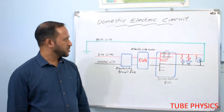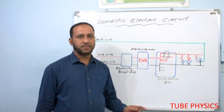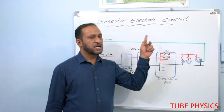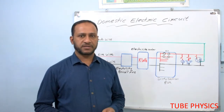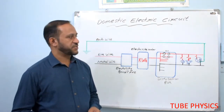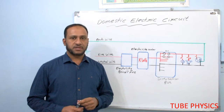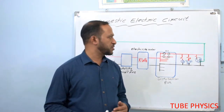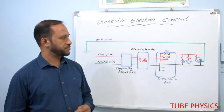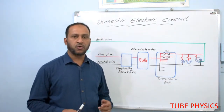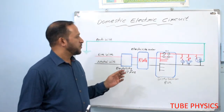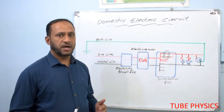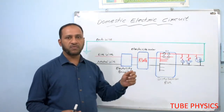Hello students. This lesson is about domestic electric circuit. This is the last topic in Magnetic Effects of Electric Current in 10th Standard Physics. This topic is very important for the coming examination and also for our day-to-day life, because every day at home, at our workplace, we are dealing with electrical circuits. So we should know the basic ideas on electrical wiring of our building.